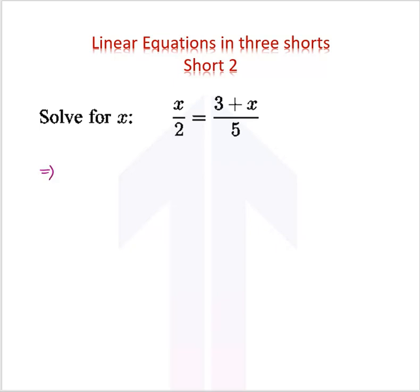First step should be to make the denominator one for each side. So we would just cross multiply - 5 goes here and multiplies, 2 goes here and multiplies. So I get 5x is equal to twice of 3 plus x.